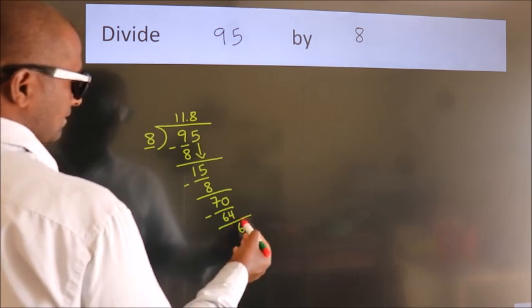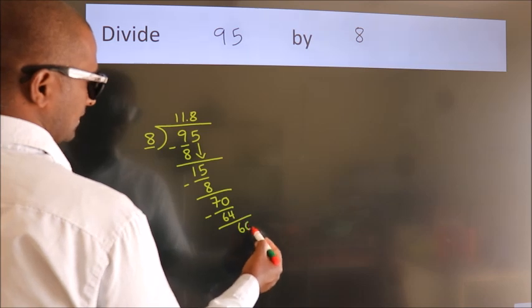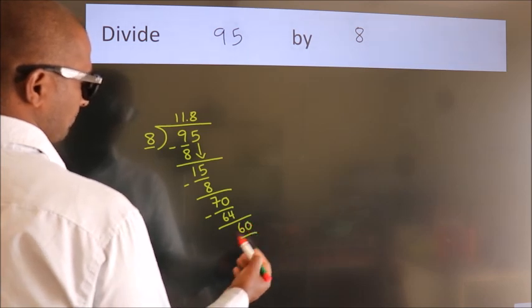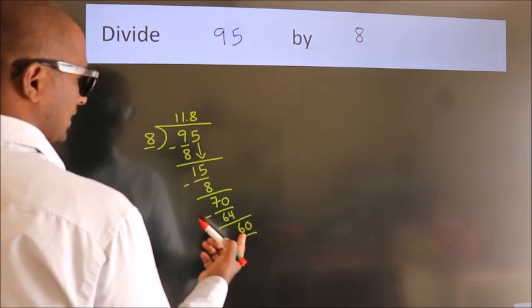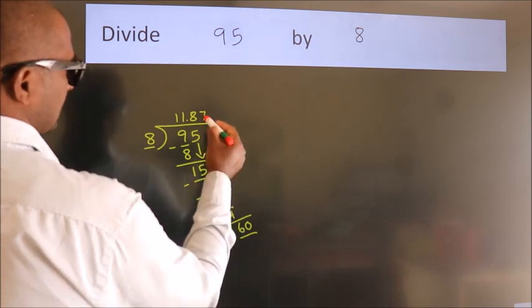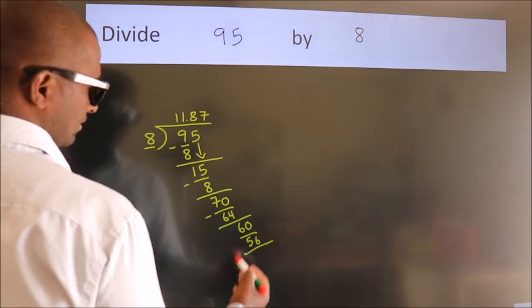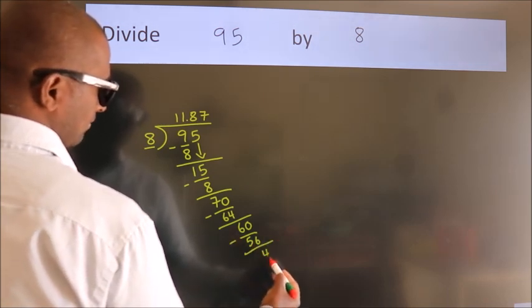After this, we already have the decimal, so directly take 0. So 60. A number close to 60 in the 8 table is 8 sevens 56. Now we subtract. We get 4.